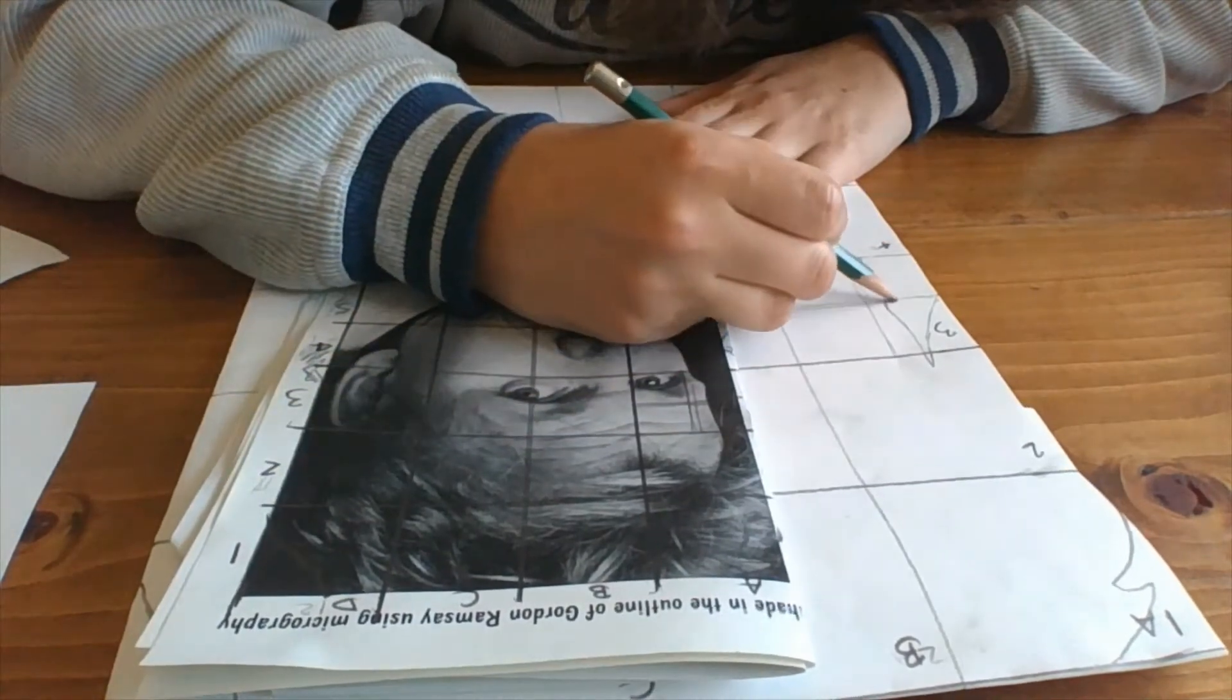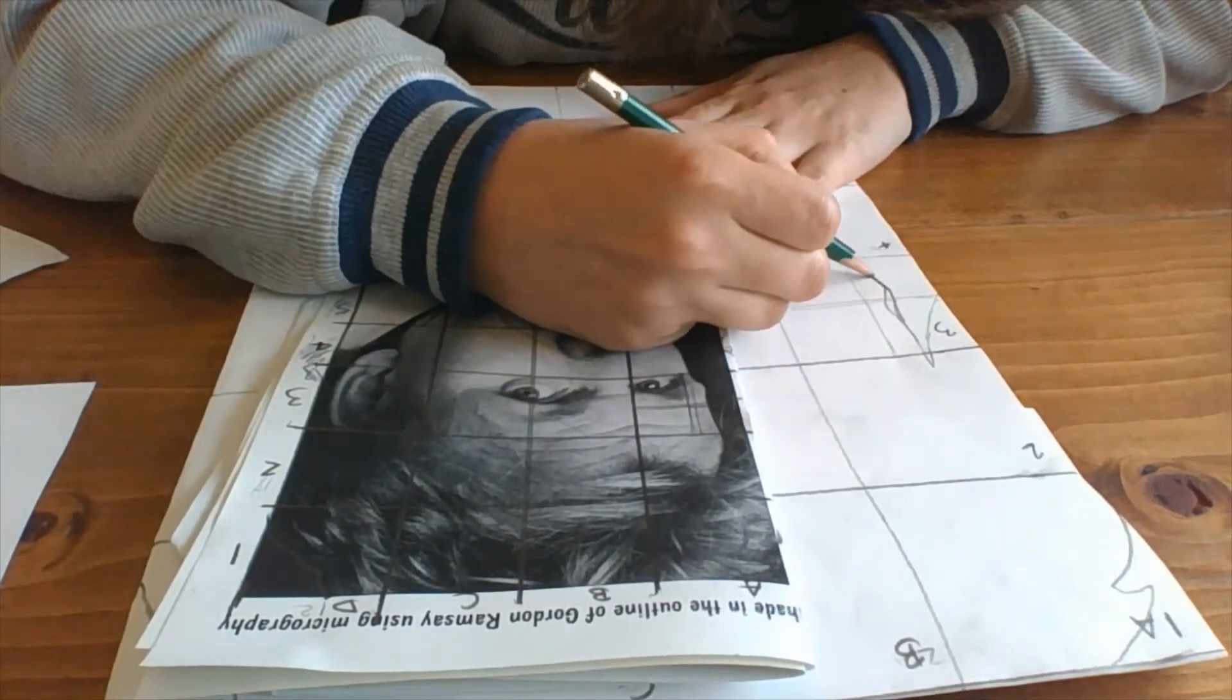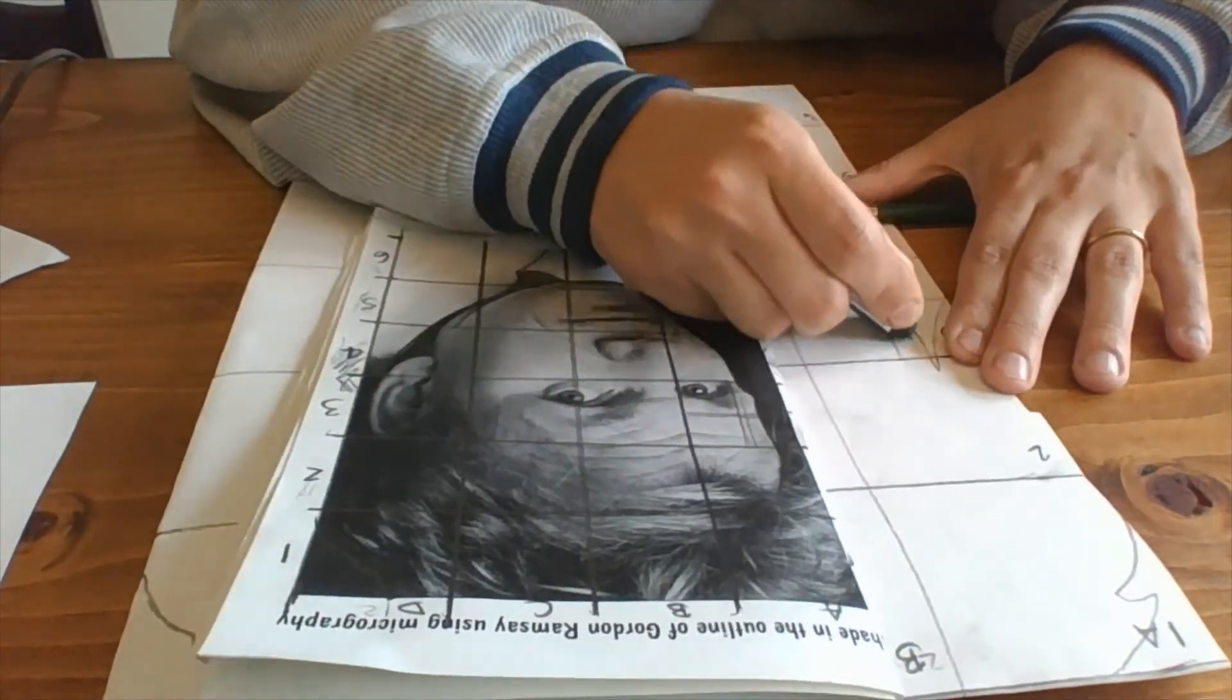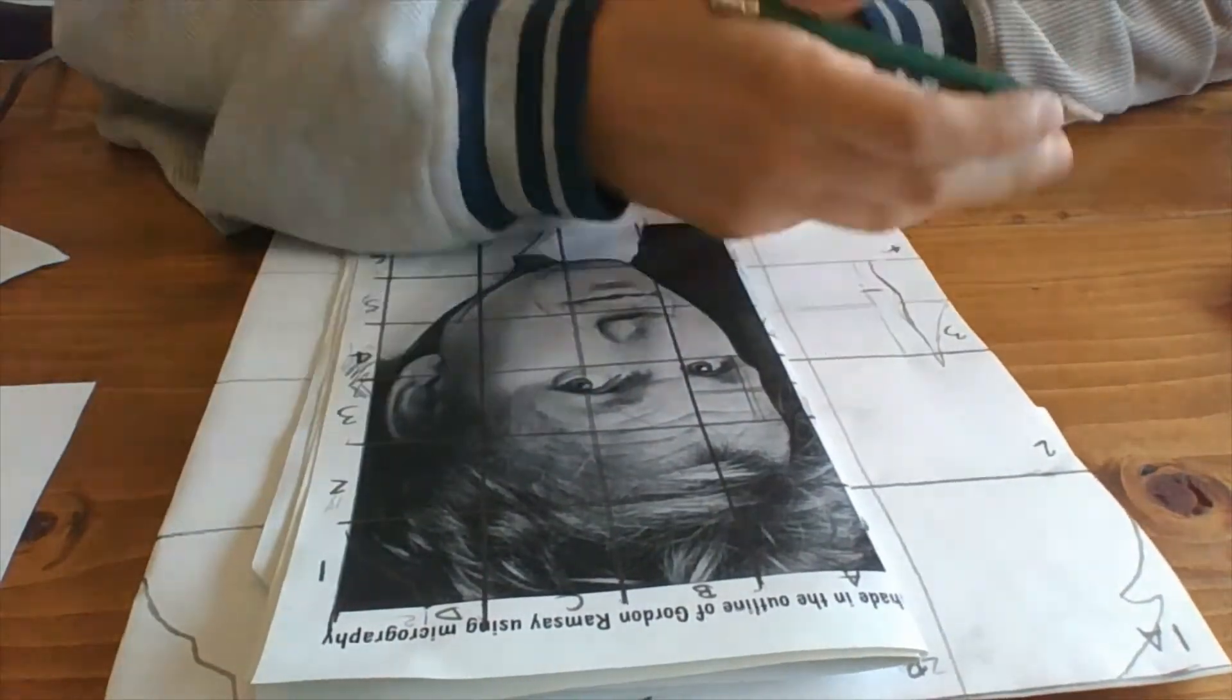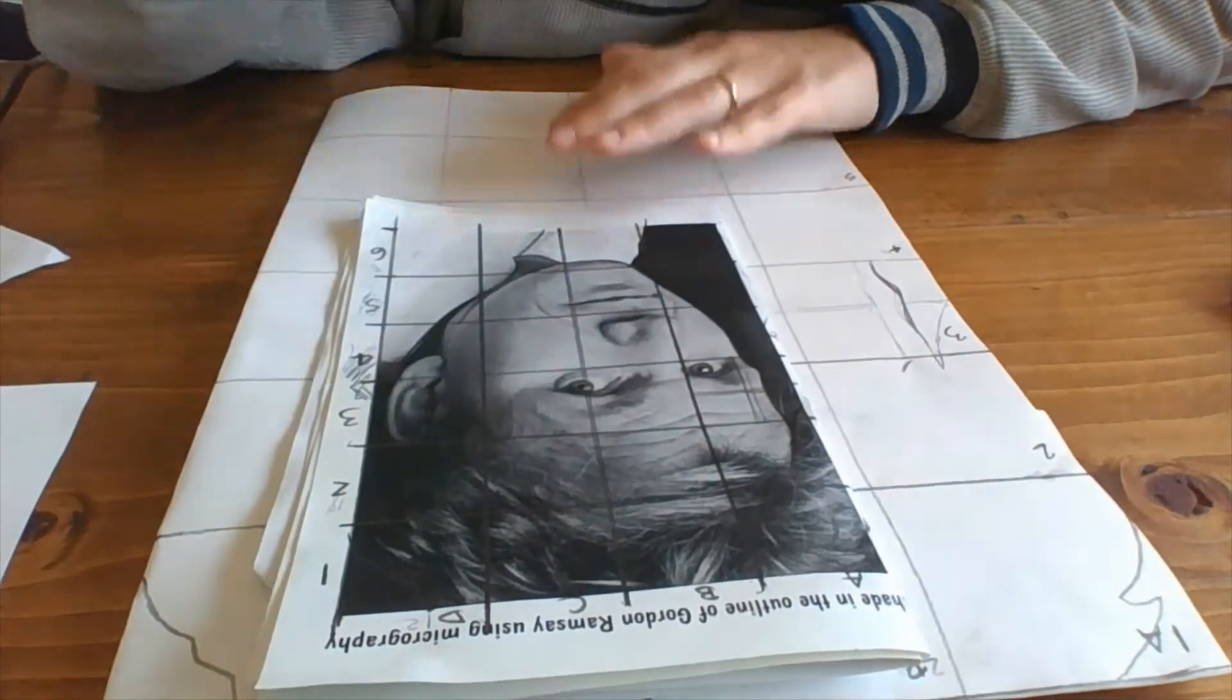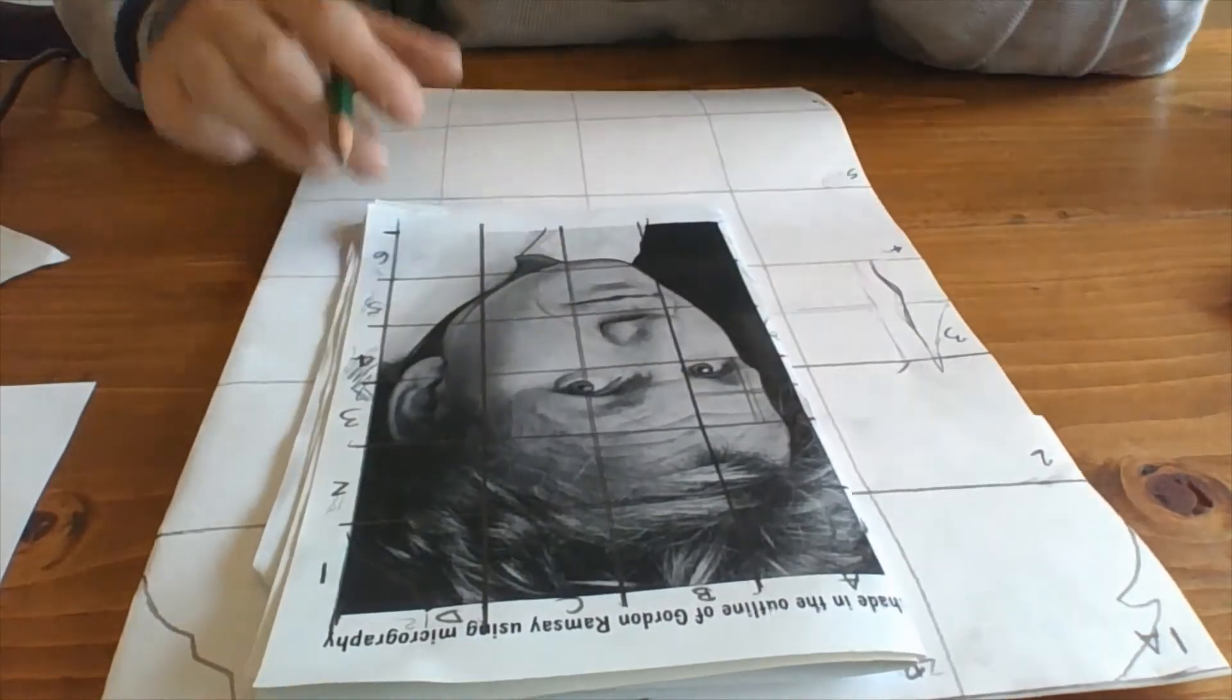That doesn't look quite right. This is kind of a fiddly process. But it does help you get more accurate in your observation drawing. So that's kind of his brow ridge right here.